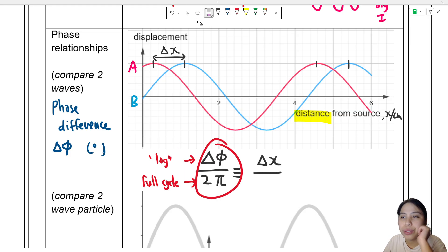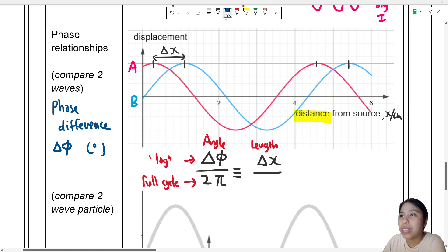So this one here - let's write this out: this is the phase difference, the lag, a small difference there. And 2π is a full cycle. So this one is first unit done in angles. The second one here will be done in length. So one full cycle in length is what we call wavelength - remember wavelength. One full cycle, this is wavelength.